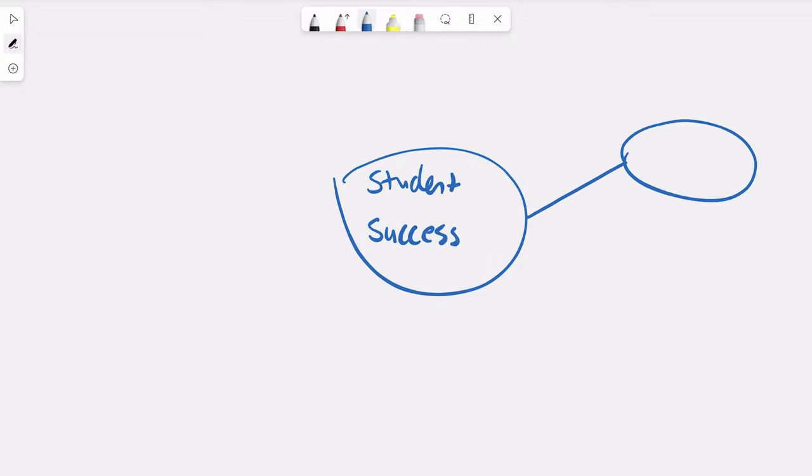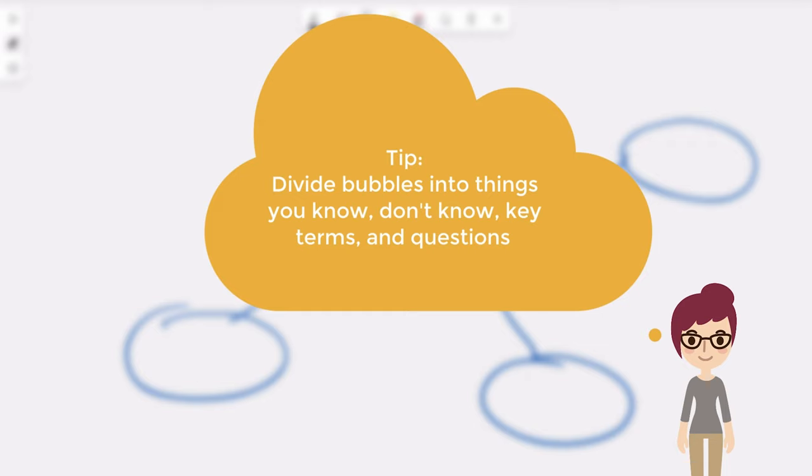Then you will create other bubbles to include topics connected to your main topic. If you are stuck, divide your bubbles into things you know about this topic, things you don't know about this topic, key terms, and questions you have about the topic.